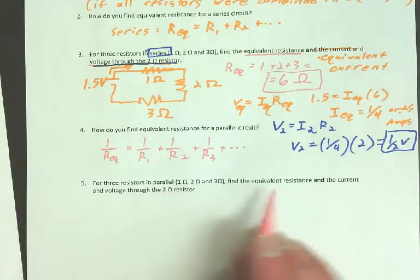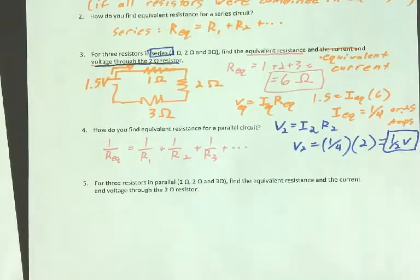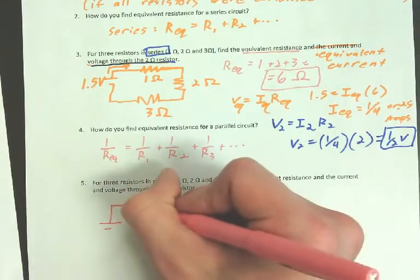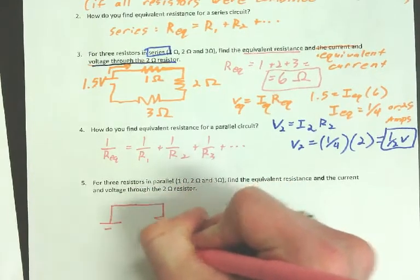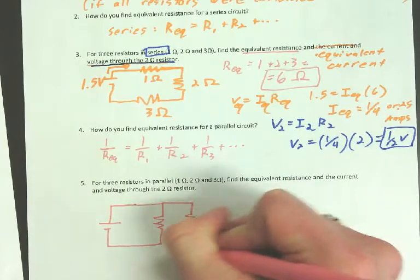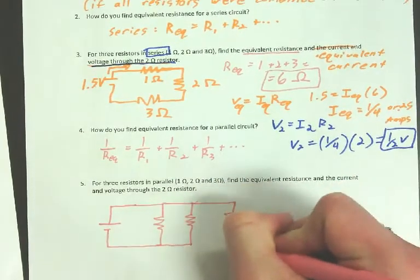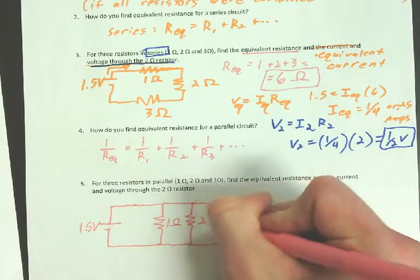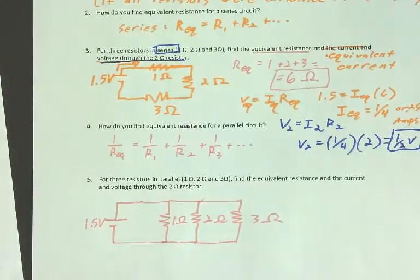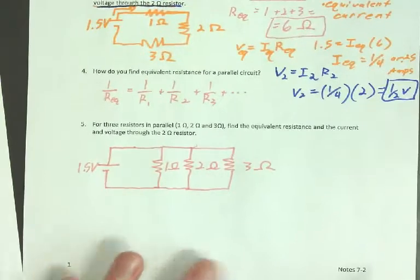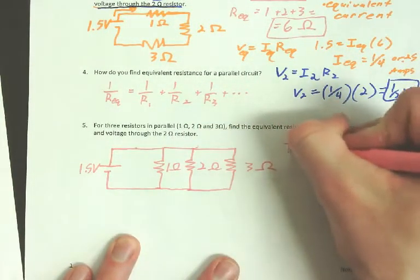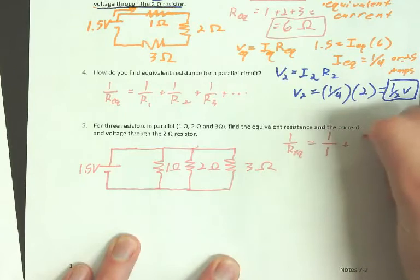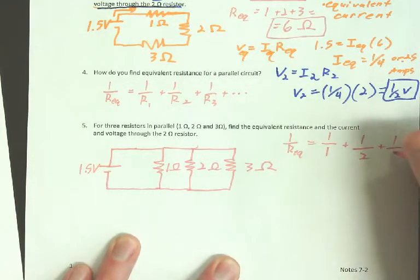Three resistors in parallel. Find the equivalent resistance and the current and voltage through the 2-ohm resistor. So same circuit as before. This time, though, it's in parallel. So it'll look like this. Still 1.5 volts. 1, 2, 3. So these are in parallel, so we're going to add them this way. 1 over R equals 1 over R1 plus 1 over R2 plus 1 over R3.